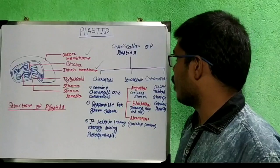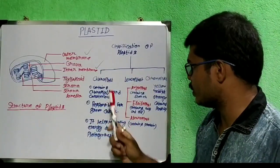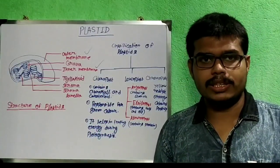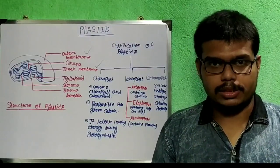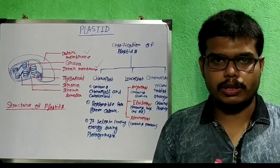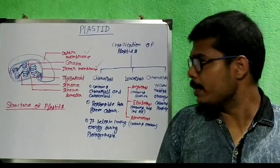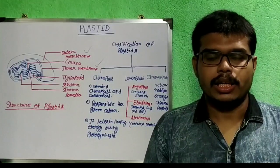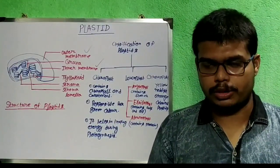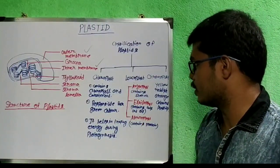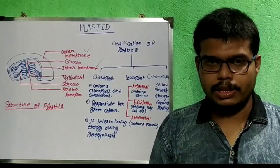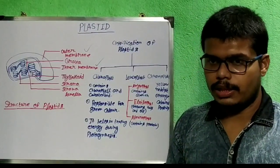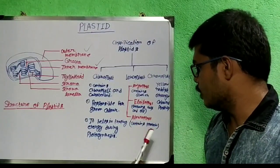Now I will discuss about the classification of plastids. There are three types: chloroplast, leucoplast, and chromoplast. Chloroplasts are the most important type in plants because they are responsible for green coloration of plants — chlorophyll and carotenoid pigments are present in chloroplasts, which helps trap energy during photosynthesis. Leucoplast is three in type: amyloplast, elaioplast, and aleuroplast. Amyloplast contains starch, elaioplast contains fats and oils, and aleuroplast contains proteins.